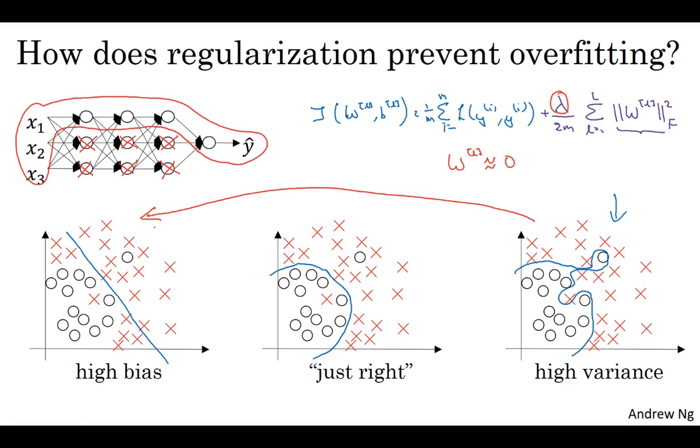But hopefully, there'll be an intermediate value of lambda that results in the result closer to this just right case in the middle. But the intuition is that by cranking up lambda to be really big, it'll set W close to zero, which in practice, this isn't actually what happens. We can think of it as zeroing out or at least reducing the impact of a lot of hidden units.